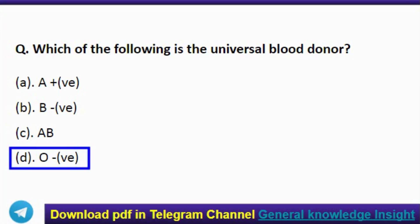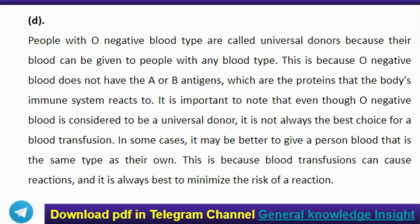The next question: which of the following is the universal blood donor? The correct answer is option D, O negative. People with O negative blood type are called universal donors because their blood can be given to people with any blood type. This is because O negative blood does not have the A or B antigens, which are the proteins that the body's immune system reacts to.